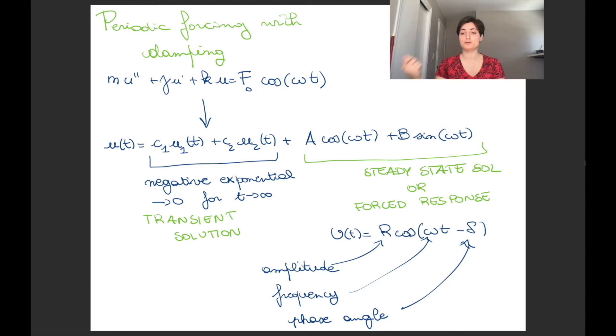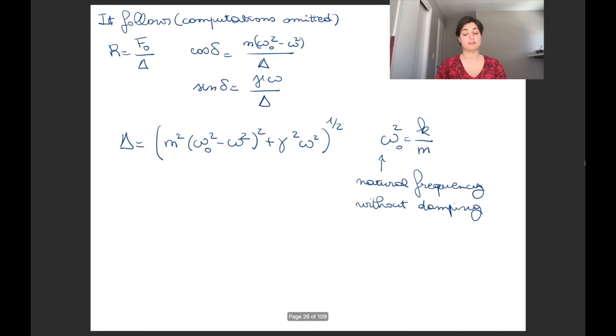If delta is equal to 0, cosine of omega t at t=0 is 1. While if delta is different than 0, you're shifting your cosine function a little bit on either side.